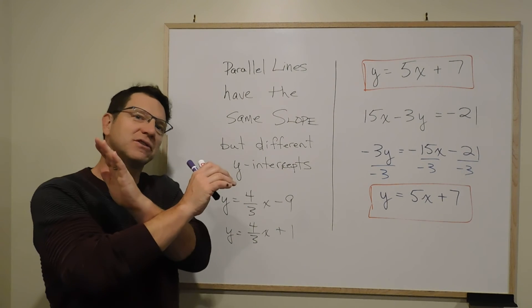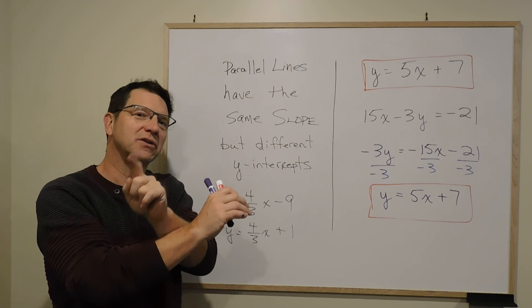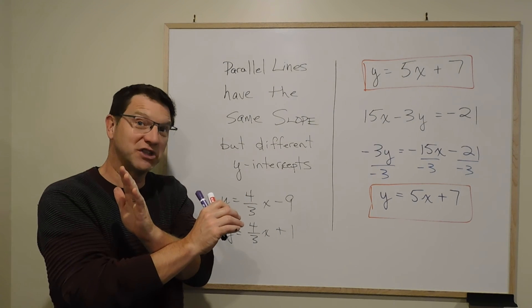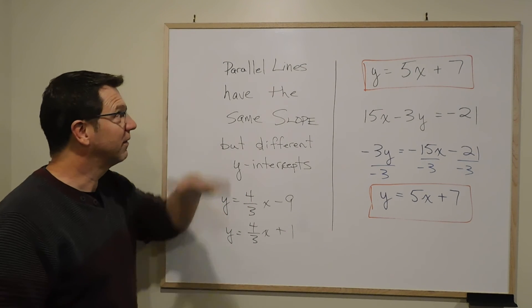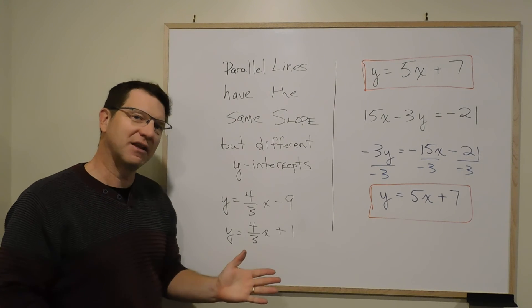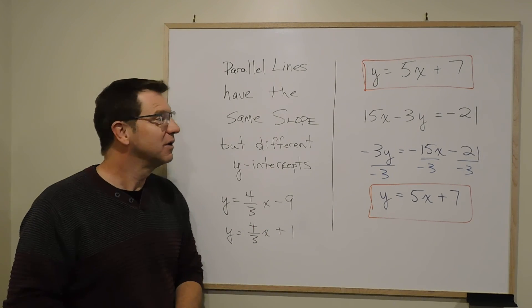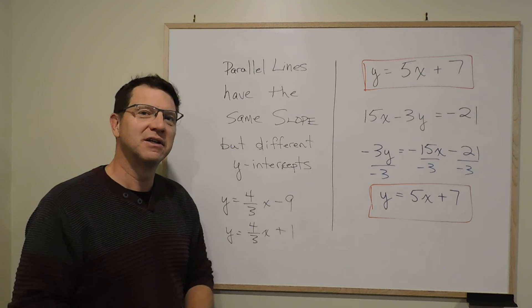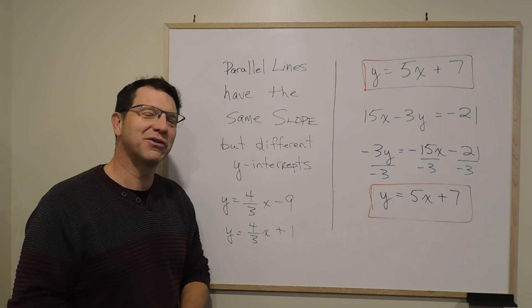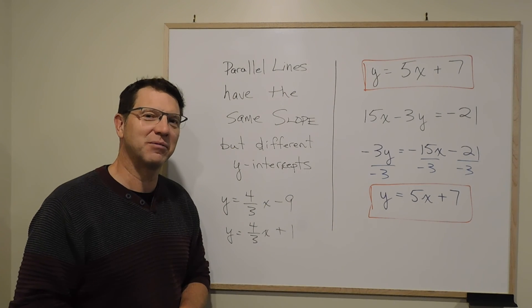Generally you get two lines that cross, which is one solution at the point of intersection. Or you'll get parallel lines that don't ever cross, so they have no solution. This third possibility exists, which means every point is a solution because they're the exact same line.